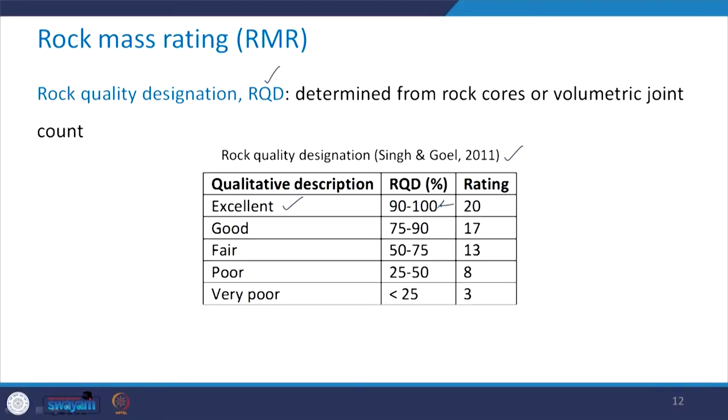The next parameter is Rock Quality Designation, RQD. This is determined from rock cores or volumetric joint count. Once we know the value of RQD, we can refer to the table to assign the rating in the RMR system. When you have an excellent qualitative description, the corresponding RQD is 90 to 100 percent and the rating assigned is 20. RQD of 70 to 90 percent gets a rating of 17; 50 to 75 percent gets 13; 25 to 50 percent gets 8; and RQD less than 25 percent gets a rating of 3.